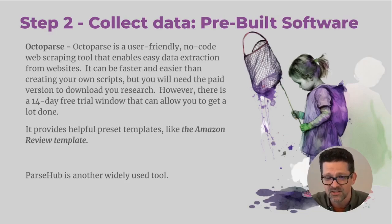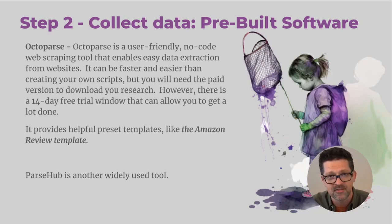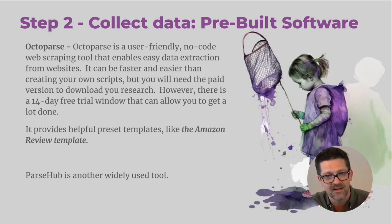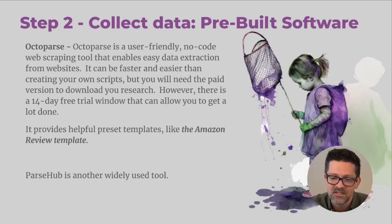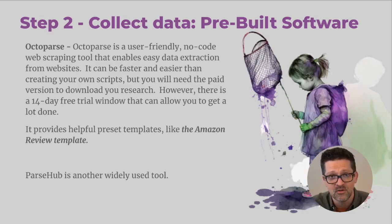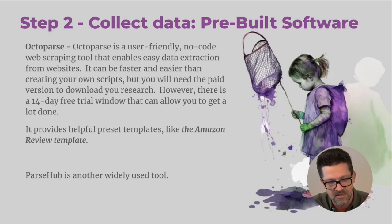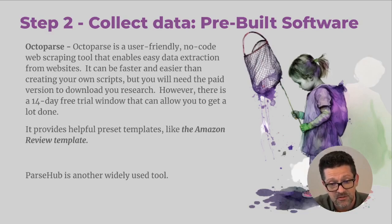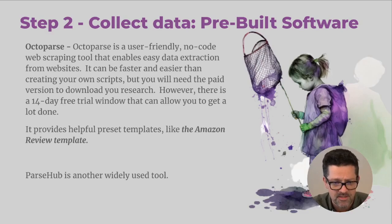We're going to dive into the pre-built software section because that's what I've had the most success with. There's a tool called Octoparse — a web scraper that will really help you grab all this stuff. You don't have to be a coder to figure it out. It has a lot of great features and is a lot easier than creating your own scripts, but it does come at a cost — about $90 a month. There is a 14-day free trial window, which means if you're just doing this for your own customers, you can get a lot done. If you're running an agency doing this for a lot of different clients, you may want to consider the paid version. There's a link to Octoparse in the description below. ParseHub is another widely used tool to consider if Octoparse isn't working for you.